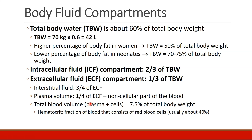Remember that your blood vessels contain not only plasma, but also blood cells. So if you wanted to calculate your total blood volume — the fluid plasma plus the cells — you would end up with a number that is about 7.5% of total body weight.